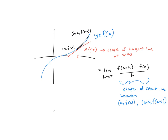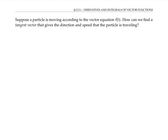So how could we generalize this process to curves defined in two or three or even more dimensions by vector valued functions? More specifically, suppose a particle is moving according to the vector equation r of t. How can we find a tangent vector that gives the direction and speed that the particle is traveling? For simplicity, I'm going to draw a diagram in two dimensions.